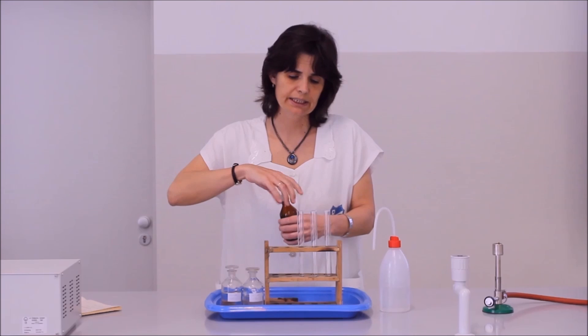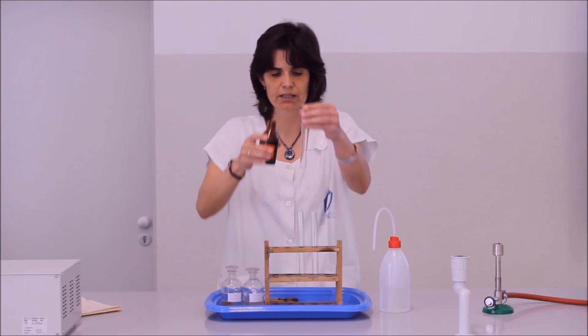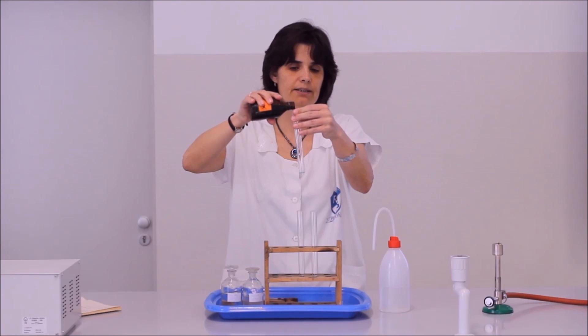Először is részszorfát oldatot fogok önteni minden három kémcsőbe, körülbelül 3,5 cm-nyit.